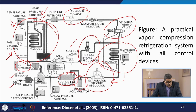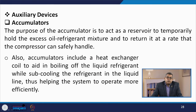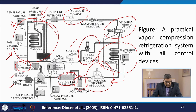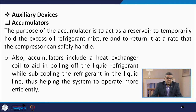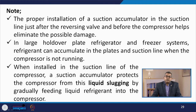When we talk about auxiliary devices, there are various types like accumulators and different types of valves. The purpose of an accumulator is to act as a reservoir to temporarily hold excess oil-refrigerant mixture and return it at a rate the compressor can safely handle. Accumulators also include a heat exchanger coil to aid in the boiling of liquid refrigerant while subcooling the refrigerant in the liquid line, helping the system to operate more efficiently. Proper installation of a suction accumulator in the suction line just after the reversing valve and before the compressor helps to eliminate any possible damage.